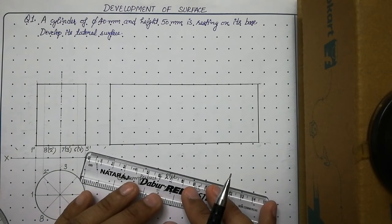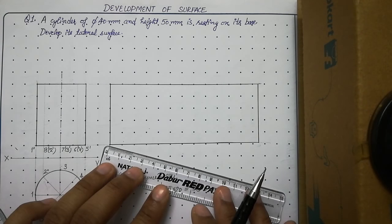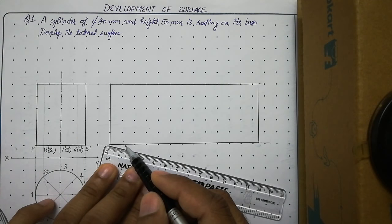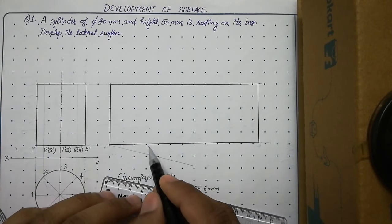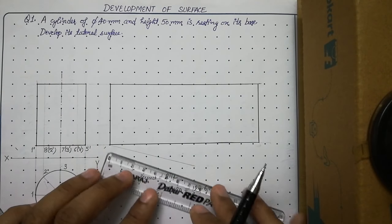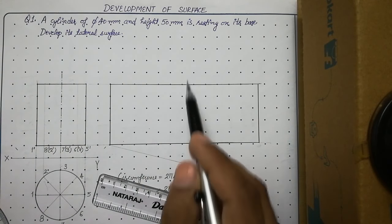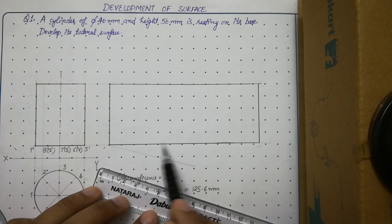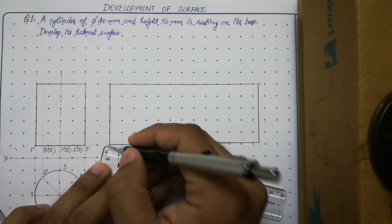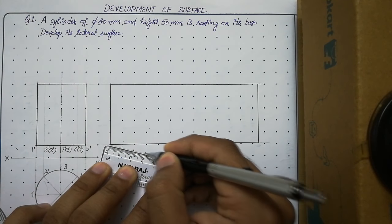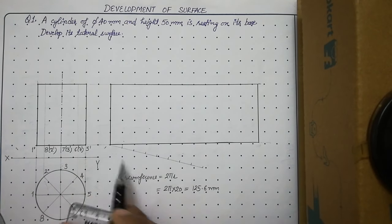For this, use your roller scale. At the starting point, align your roller scale at an acute angle — around 10 or 20 degrees. Draw a thin line of any length at the start. We have 8 generators, so we need to divide the development into 8 equal parts. To do this, align your roller scale with the marked length and make 8 equal divisions on this line. Use a division length of 1 cm, so the line will be 8 cm total.